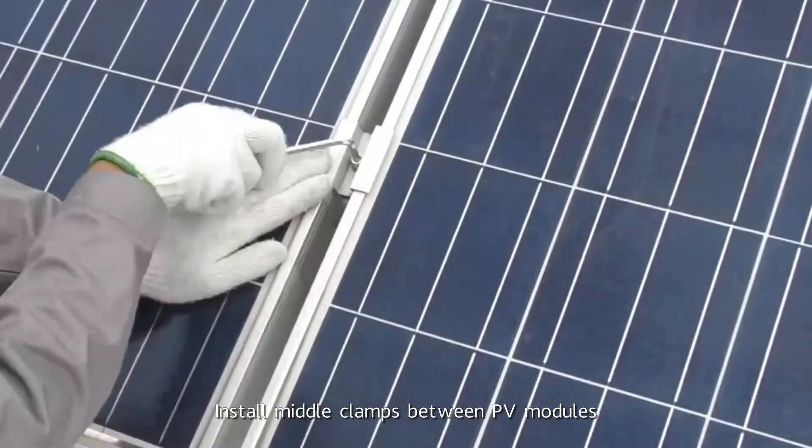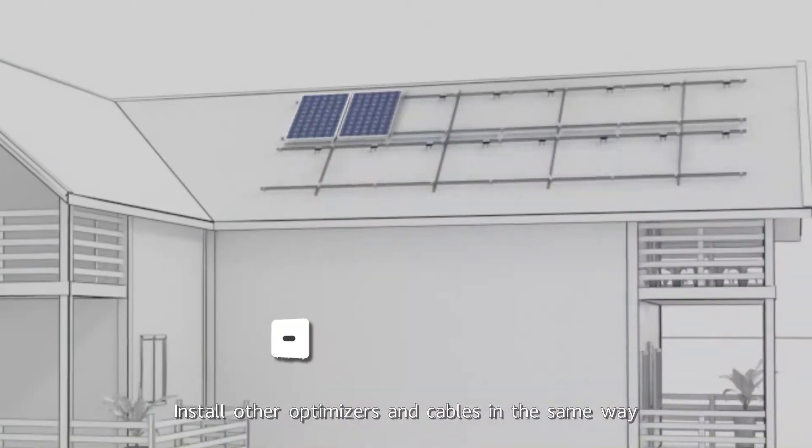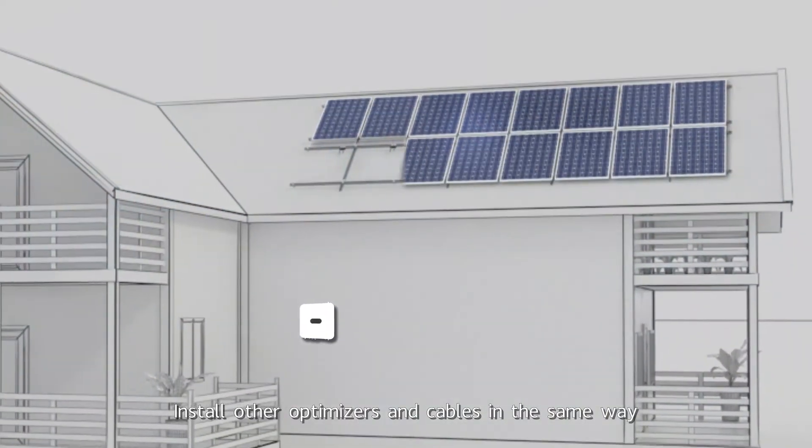Install middle clamps between PV modules. Install other optimizers and cables in the same way.